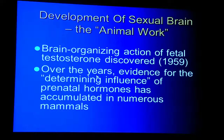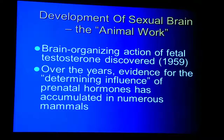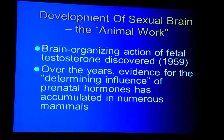The animal work: in 1959, the first paper showed the biological origins of sexual behavior by treating female guinea pigs with testosterone during the later stage of pregnancy — after the genitalia had formed. Upon puberty activation, these guinea pigs, although female, had sexual behavior that was very male-like, showing that testosterone was organizing the brain and behavior was affected later in life. Many, many mammals have been studied since then, and all the evidence points to a determining influence of prenatal hormones on sexual behavior, without exception.